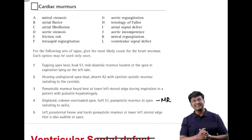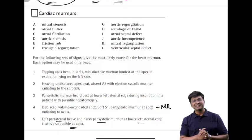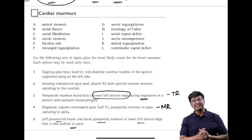The fifth clinical scenario: left parasternal heave and harsh pan-systolic murmur at the lower left sternal edge, also audible at the apex, with no variation with respiration. Unlike tricuspid regurgitation which increases on inspiration, this murmur shows no respiratory change — making it ventricular septal defect (VSD).